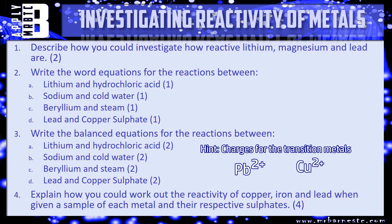I'll put some links on the right-hand side of this video. And finally, question four: explain how you could work out the reactivity of copper, iron and lead when given a sample of each metal and their respective sulfates — this one is looking at displacement reactions. How would you do it step by step? Pause the video, have a go at each question and we'll go through them in a minute.